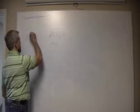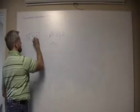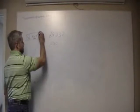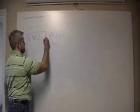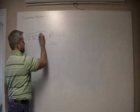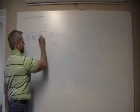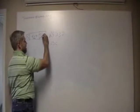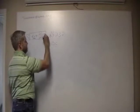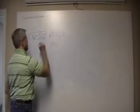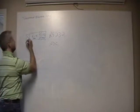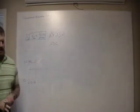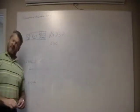The framing is: one start bit, between five and nine data bits, then zero or one parity bit, and then one, one-and-a-half, or two stop bits.